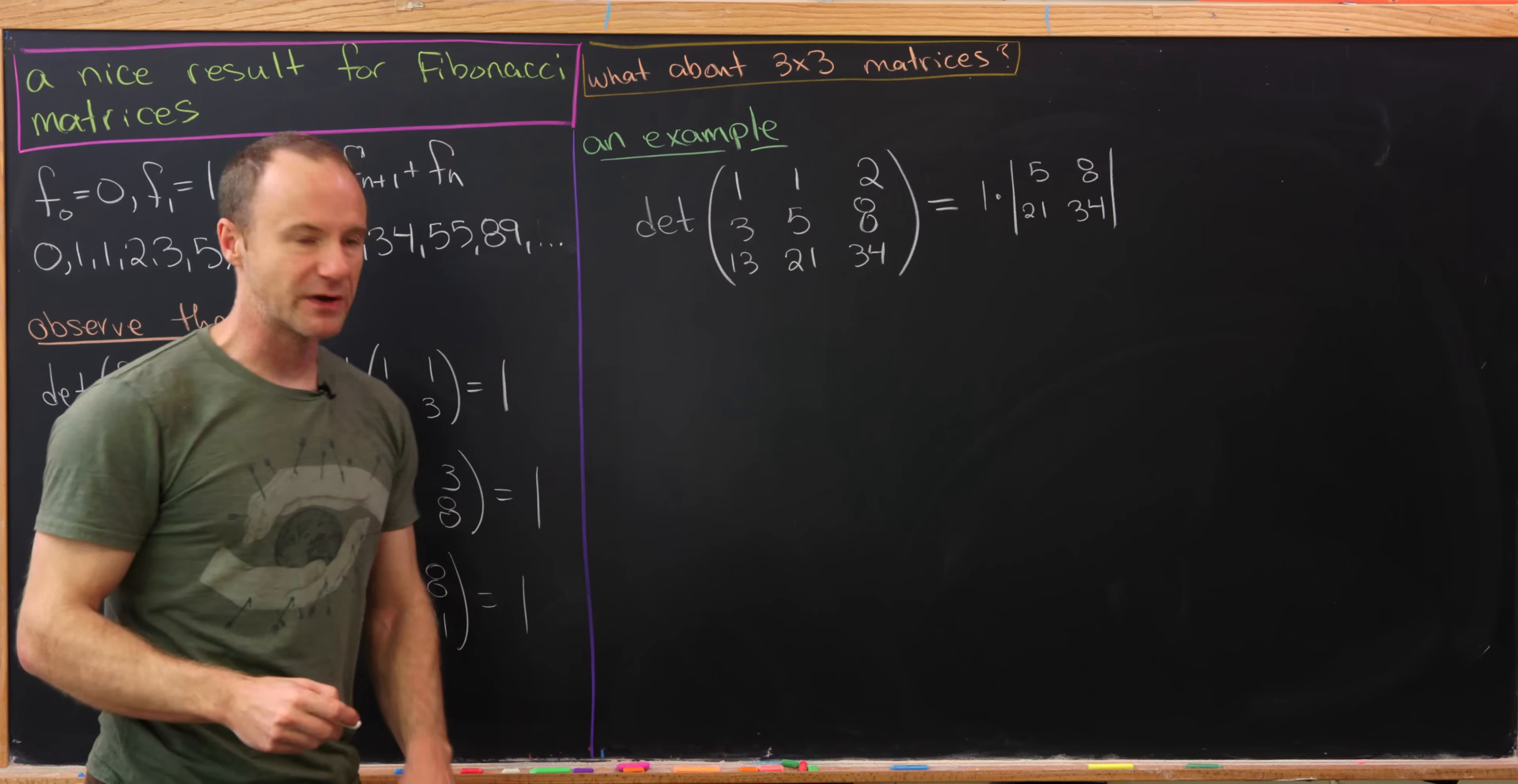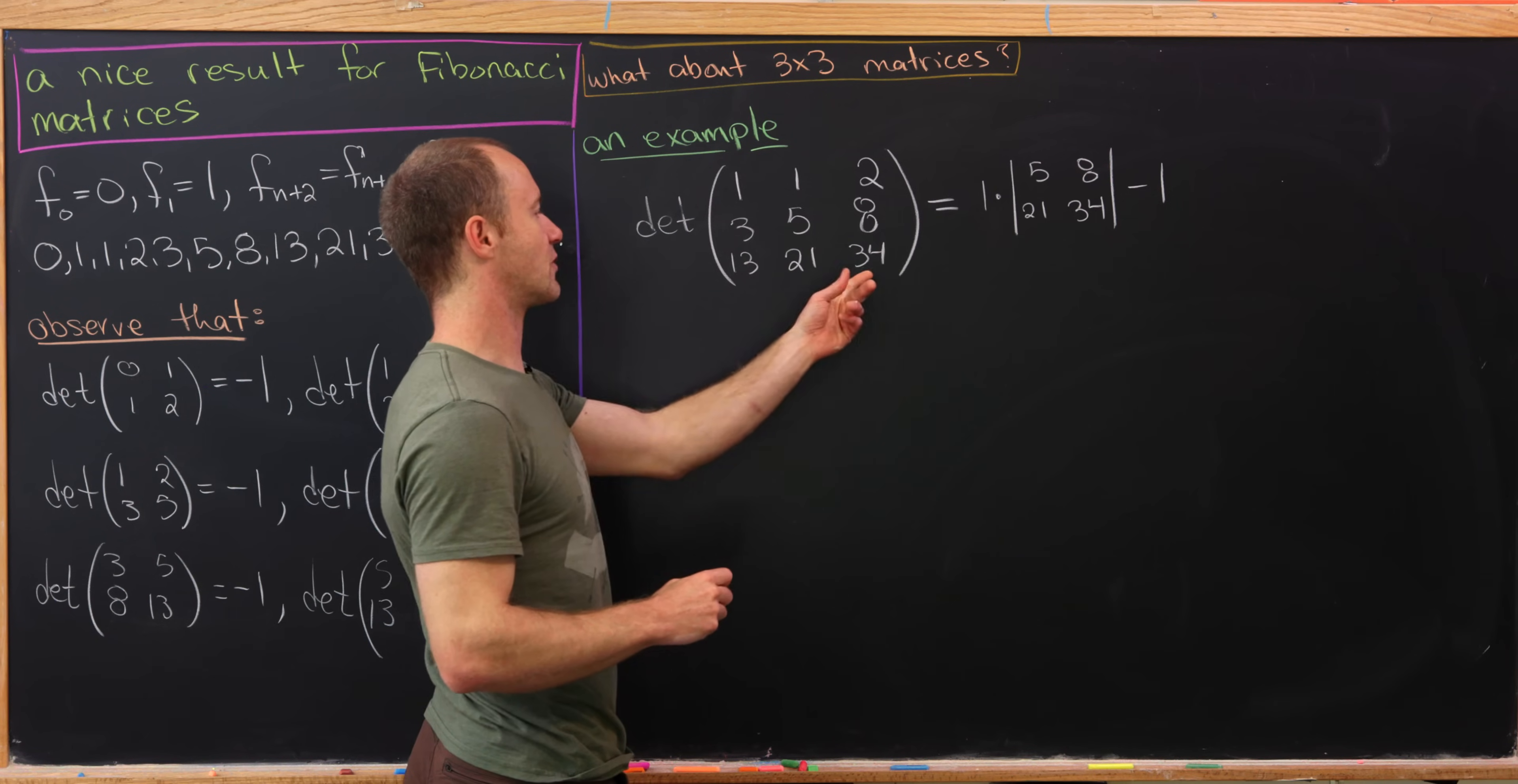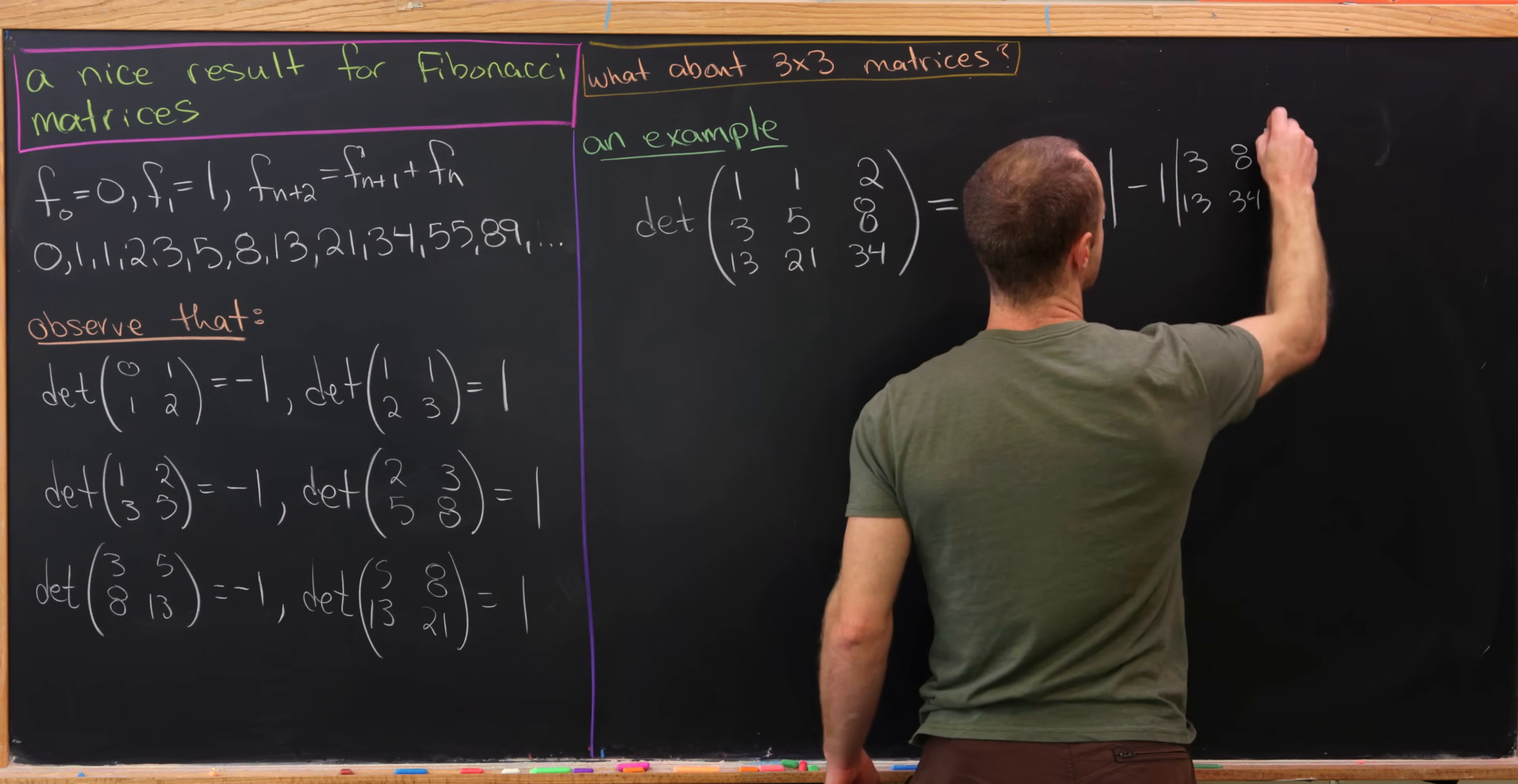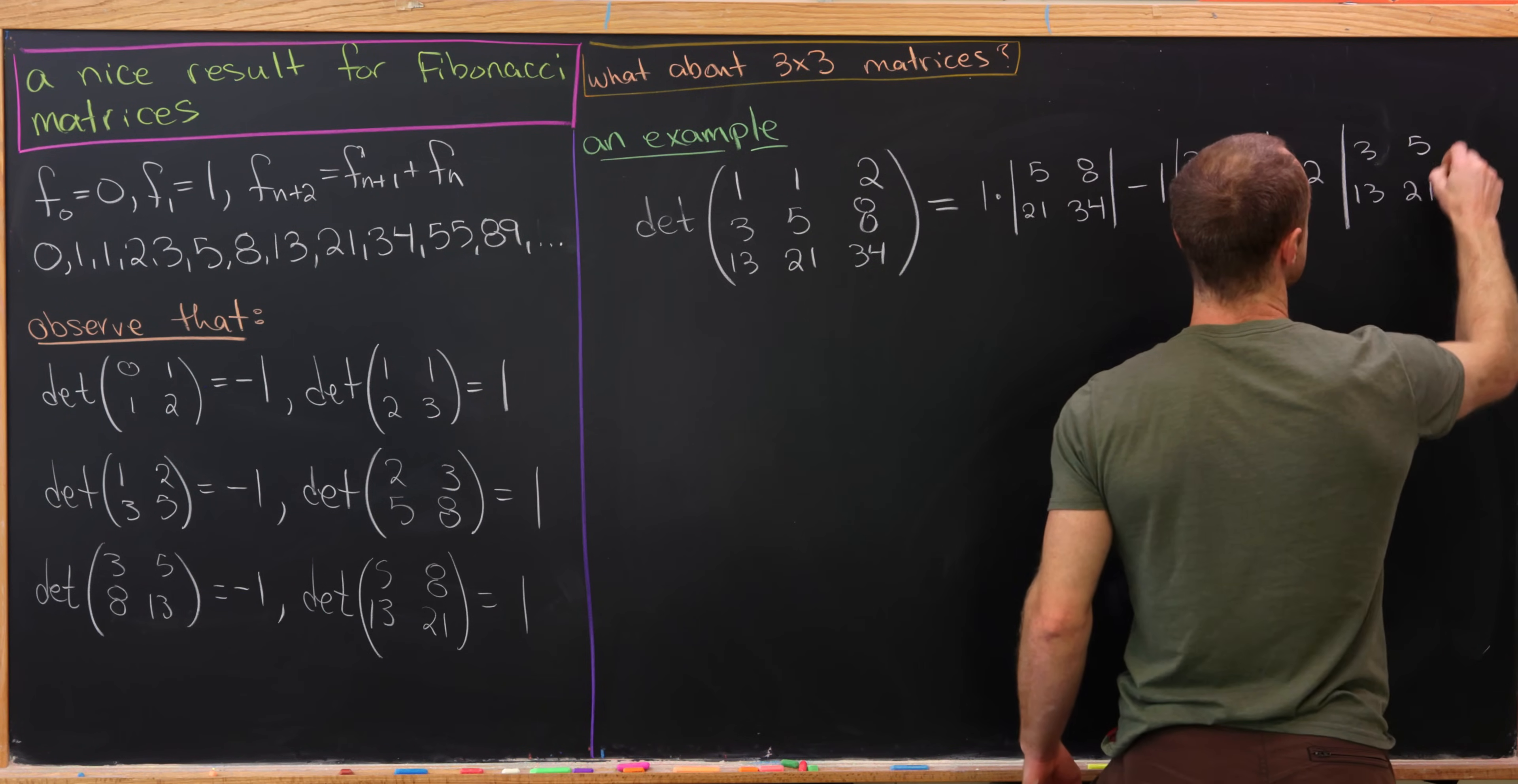Great. And then built into that formula is a minus sign. So we'll have minus 1 times, well, we'll make the cross with the first row and the second column. And then the remaining 2 by 2 matrix, which is 3, 8, 13, 34. So 3, 8, 13, 34. And then finally plus 2 times the remaining submatrix, which is 3, 5, 13, 21.